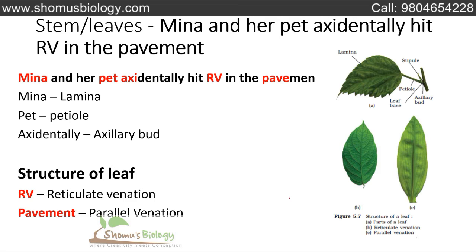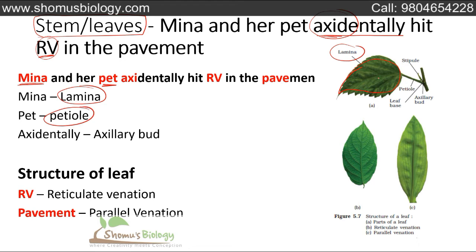Now for stem and leaves, the mnemonic is: 'Mina and her pet accidentally hit RV in the pavement.' Mina means lamina — the main surface area of the leaf. 'Her' — H is silent — then 'pet' stands for petiole, the region that connects the leaf to the rest of the plant. 'Accidentally' gives you axillary bud, which is the connective junction between the leaf and the stem.